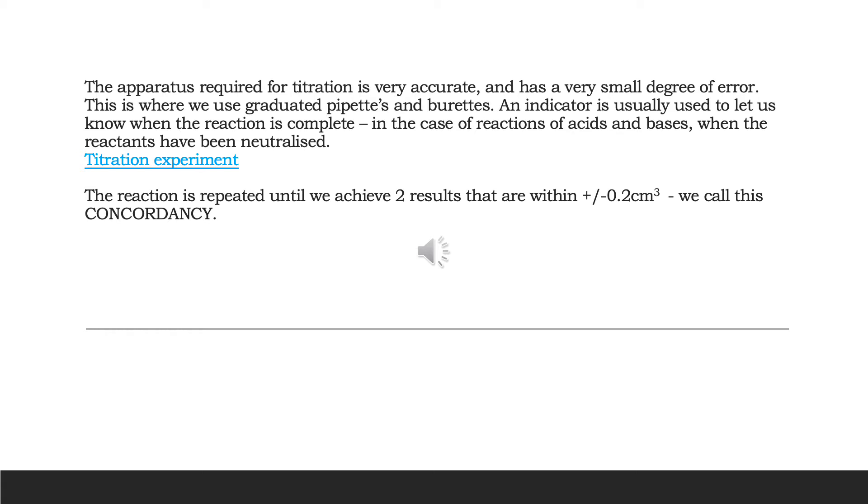So the technique is really very accurate. It uses apparatus where there's a small degree of error. Graduated pipettes and burettes are very accurate. They maybe only have an error margin of plus or minus 0.1 cubic centimetres. Now for the experiment itself we should always repeat it and we repeat it so that we end up having a value difference of no more than plus or minus 0.2 cubic centimetres. We call this concordancy and that's the same for higher as well but when we get to advanced higher then when we repeat the experiment the difference is only 0.1 cubic centimetres.